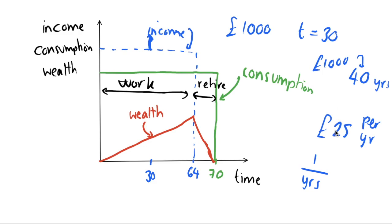And so this marginal propensity to consume is much less than one. We earn a thousand pounds but we don't spend it all. In fact, our marginal propensity to consume is going to be 1 over how many years we have left. So we have 40 years left, so each year we're going to spend 1/40 of our windfall of income.